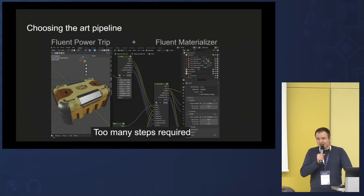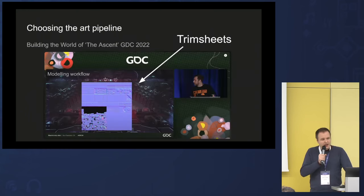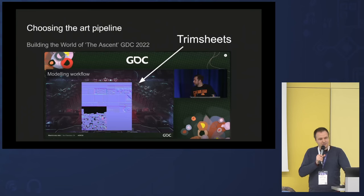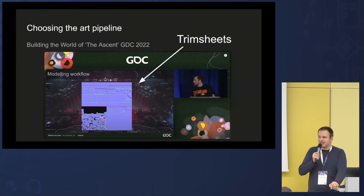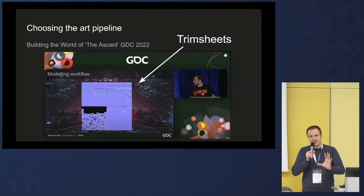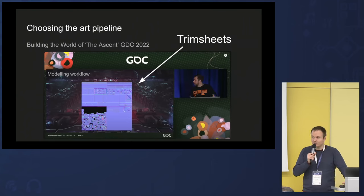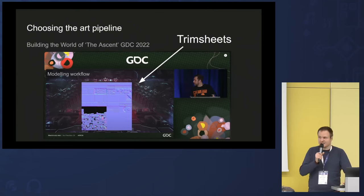I took a step back and remembered another technique, illustrated well in a GDC talk about world building in The Ascent game. The lead director gave a presentation about how the entire game — a big open world — uses just one trim texture sheet for the entire game, which has a lot of advantages. By using trim textures they were able to make a complex game with a very limited small team, producing thousands of asset pieces very quickly. So I started looking into trim sheets.